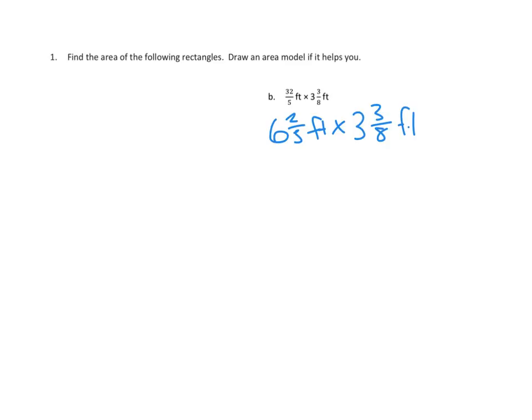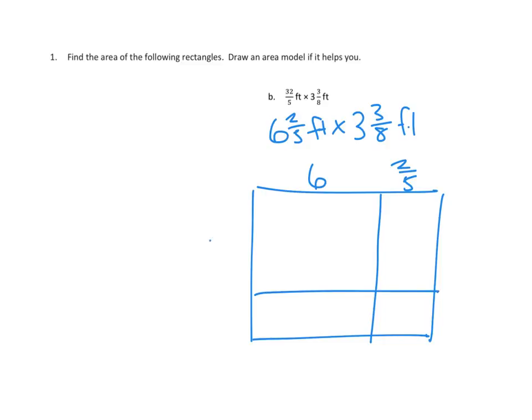That's a better representation, right? 6 and 2 fifths. And those mixed numbers look like they're more manageable. In fact, I'm going to go ahead and do an area model. 6 and 2 fifths, I think that means this is 6 and this is 2 fifths. And then on this side, we've got 3 wholes and 3 eighths more, so 3 and 3 eighths. Now we should be able to go ahead and do our area model multiplication.